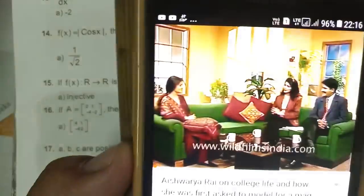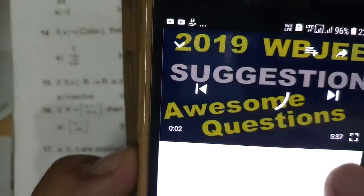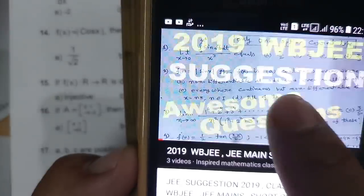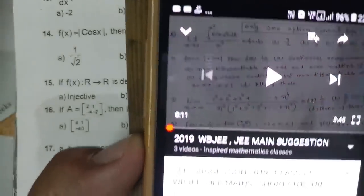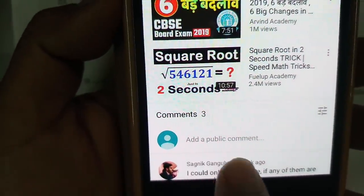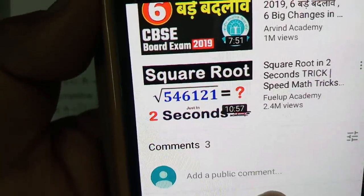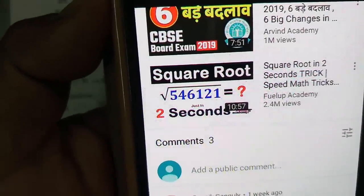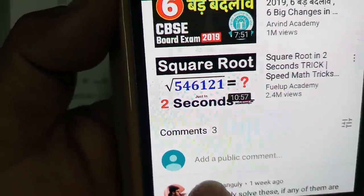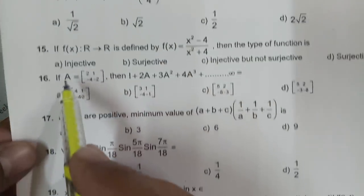And scroll here, scroll here. And here comment is coming: add a public comment. So your comment, your answer, please write your answer as a comment in here, okay. So question number 13, 14, 15, 16.